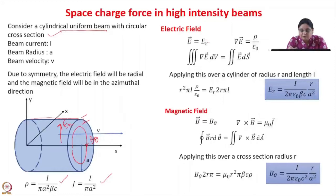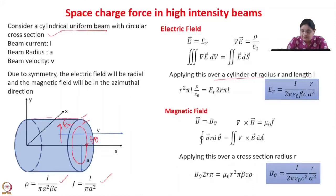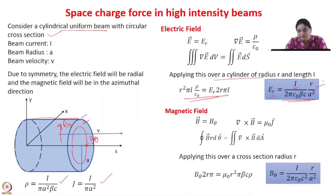The radial component of electric field can be calculated from Maxwell's equation — divergence of E equals rho over epsilon_0. Applying Gauss's law as the volume integral of divergence of E equals the surface integral of E dot dS, and applying this over a cylinder of radius R and length L, we get an expression for the radial component of electric field. We see that it depends upon the beam current — higher the beam current, higher is the radial electric field. It also depends upon R, the distance from the center, and the beam size.